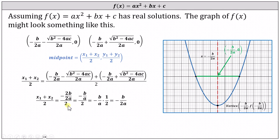Simplifying in the numerator, we have -b/a, all divided by 2. Dividing by 2 is equivalent to multiplying by 1/2, so -b/a × 1/2 = -b/2a. This is the x-coordinate of the midpoint of the green segment whose endpoints are the x-intercepts of the parabola, indicating the x-coordinate of the vertex must be -b/2a.